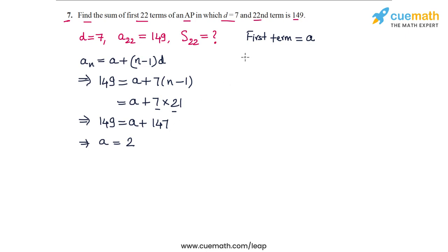Now it's straightforward to find S_22. So for that purpose, we are going to make use of the relation S_n, the sum of N terms is equal to N by 2 into A plus the last term or the Nth term.